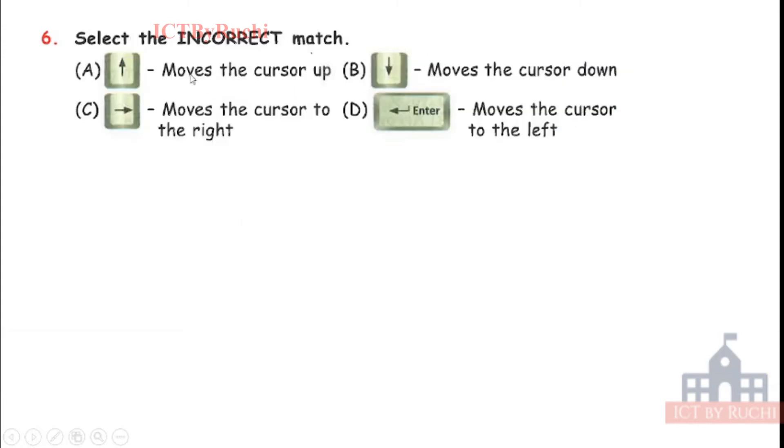Select the incorrect match. We have four arrows like up, right, down and enter key. A part up, move the cursor up. B part down, move the cursor down. C, move the cursor to the right. D, enter, move the cursor to the left. So tell me which one is incorrect, which one is wrong. Answer is D, enter. Because enter key brings the cursor to the next line.